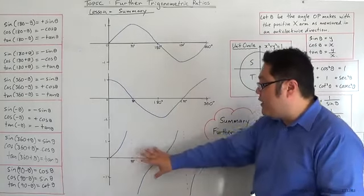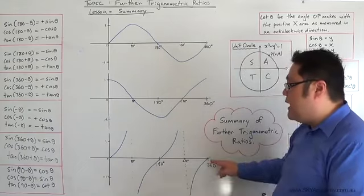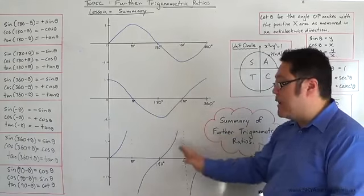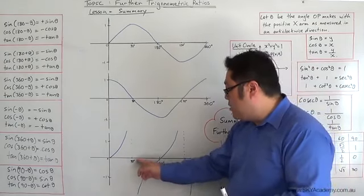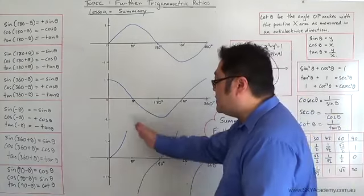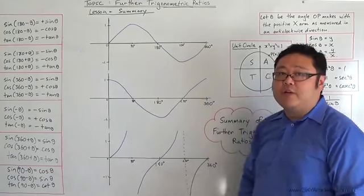We worked out a tan graph that looks like this, starts at 0, ends at 0, that has asymptotes, remember, asymptotes, at 90 and 270 degrees. Asymptotes being lines that act as boundaries that the graph will approach, but never actually reach.